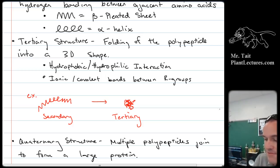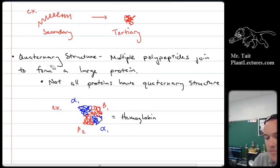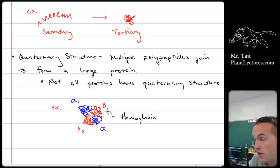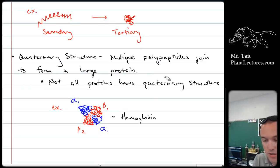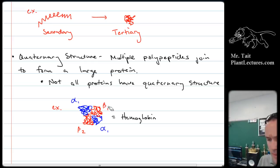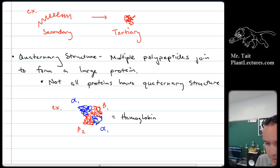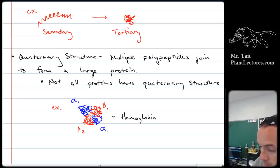Once the protein has its final shape, it's called a polypeptide. Polypeptides can join together to form a quaternary structure, which is multiple polypeptides bonded together. Not all proteins have a quaternary structure, but some do — this is hemoglobin. Later in the year, we talked about the fact that sickle cell anemia is caused by misshaped hemoglobin. It's caused by a mutation in the beta chains, which changes the total shape of the hemoglobin and then changes the shape of the red blood cell.